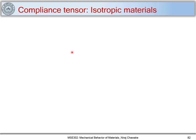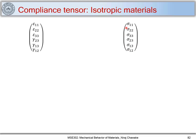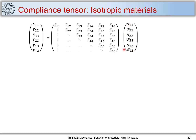In the last part we related strain components to stress components via a compliance tensor. This compliance tensor has 36 components, out of which 21 are independent — because our compliance tensor is also symmetric. We have seen this compliance tensor in the context of isotropic materials.